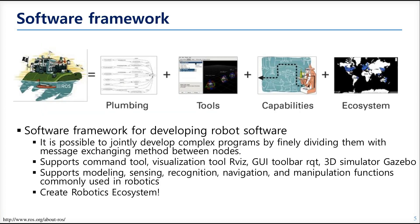ROS is a software framework. It is made up of main nodes which play a specific role in the robot system. The developers can divide their work and make nodes in a specialized field. ROS provides many tools that you will need during development — there are RVIZ, RQT, and Gazebo, the 3D simulator.